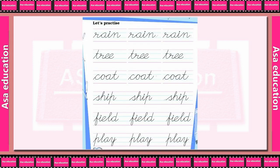Let's practice: rain, tree, court, ship, field, and play. This is how you can write it in beautiful cursive handwriting. You can write and practice it. So this is how you did your exercise. Subscribe to my channel, Assay Education. Bye bye.